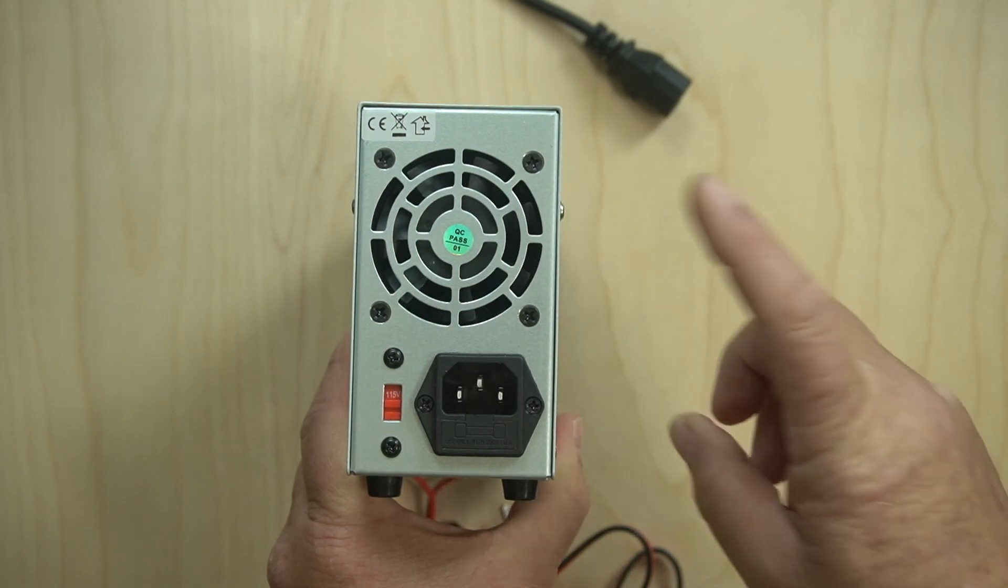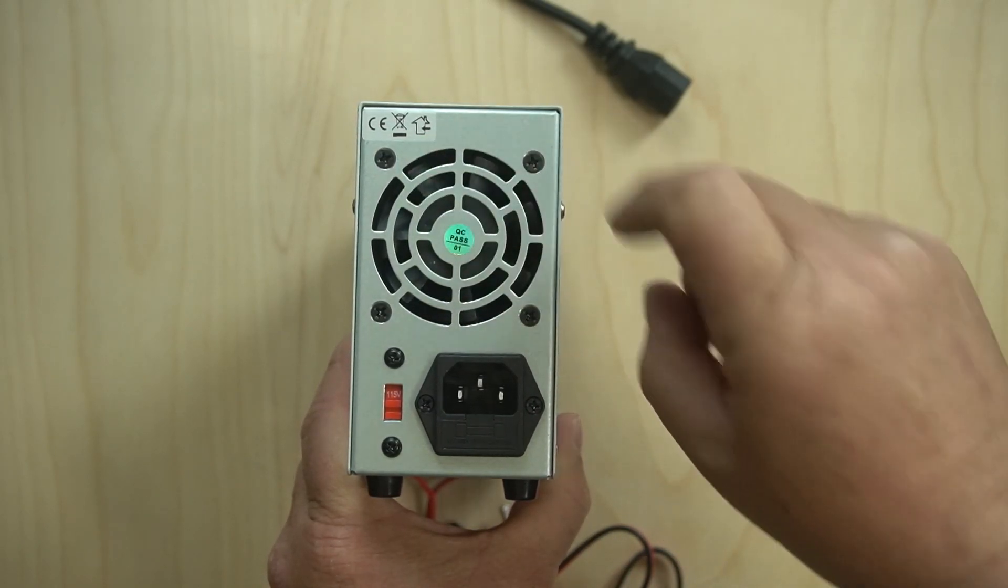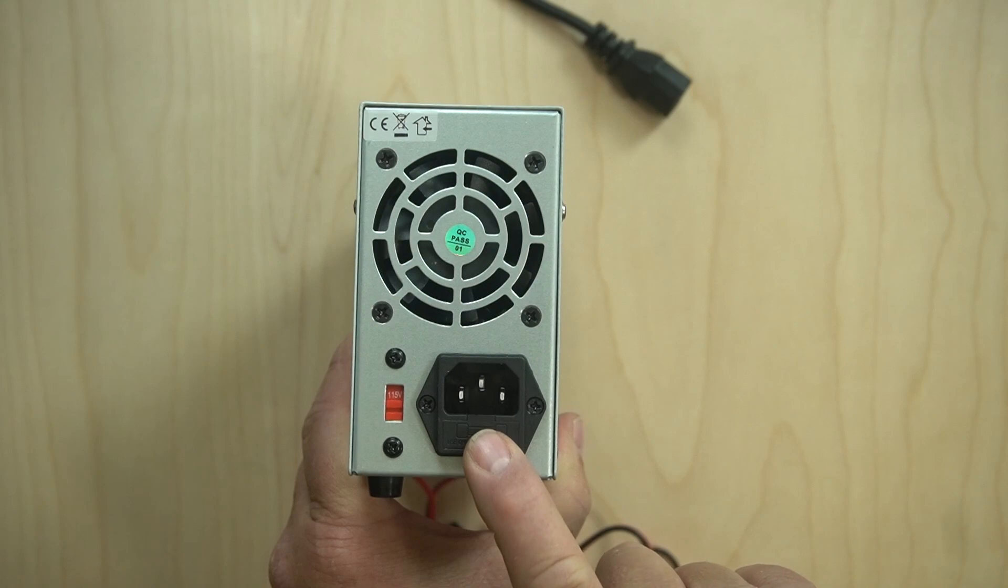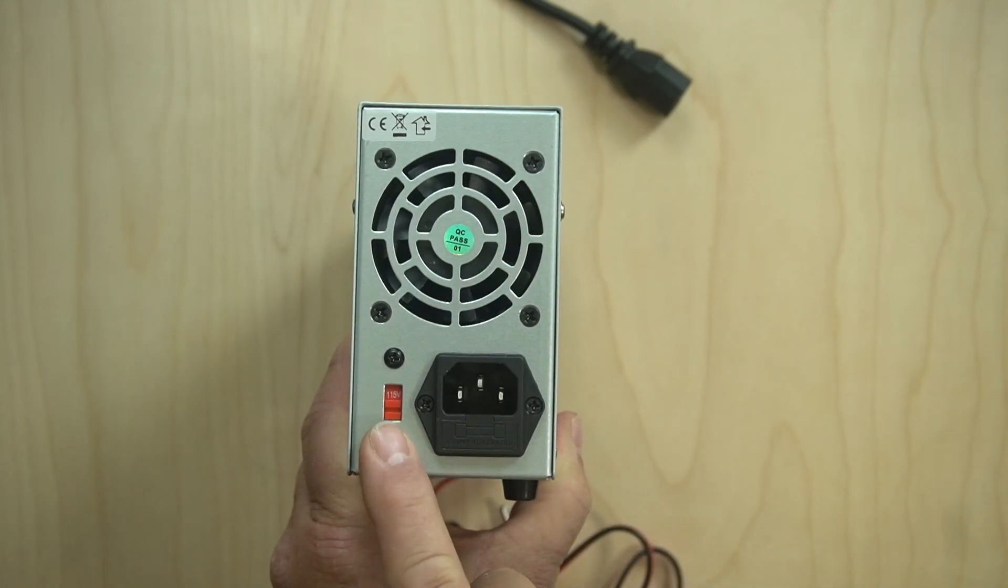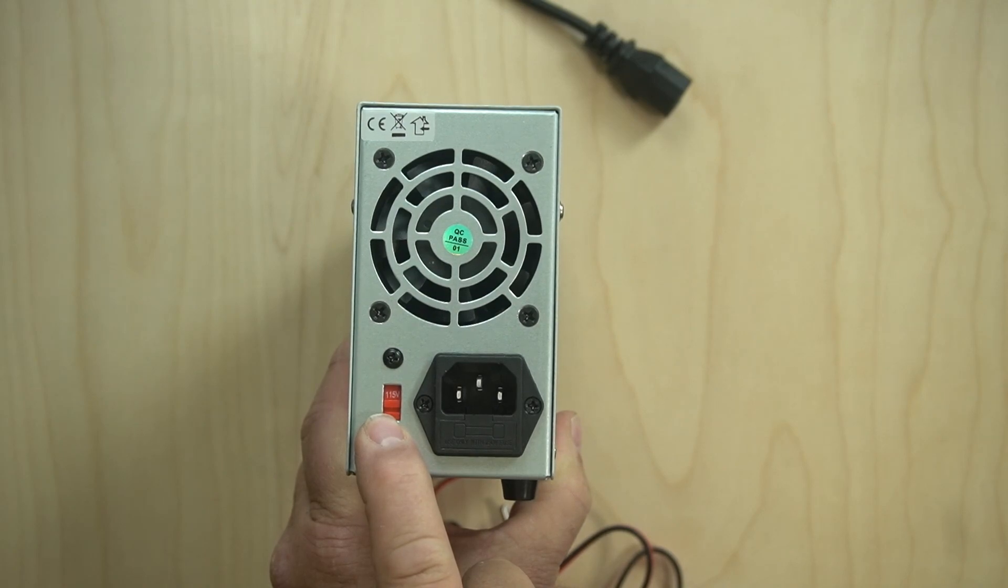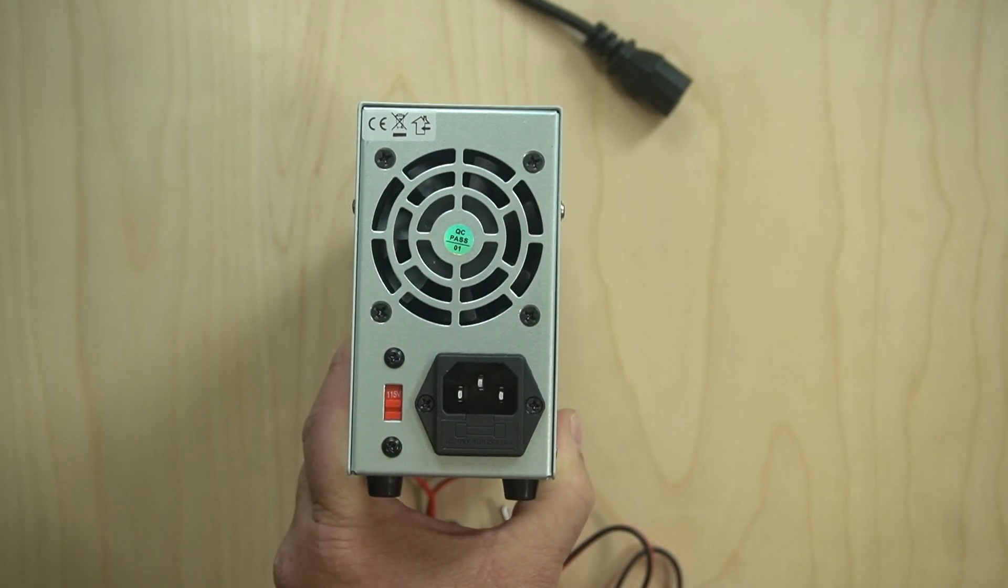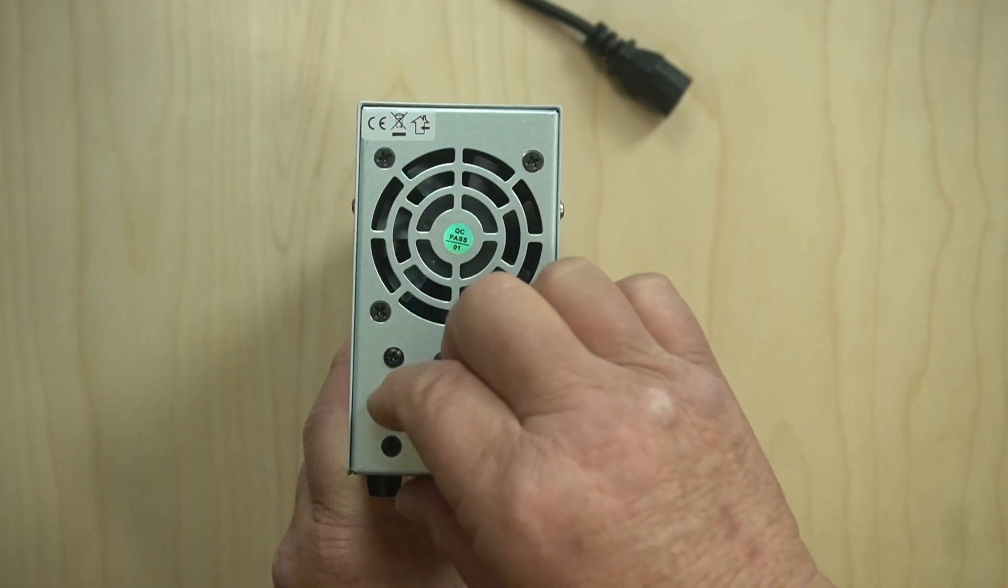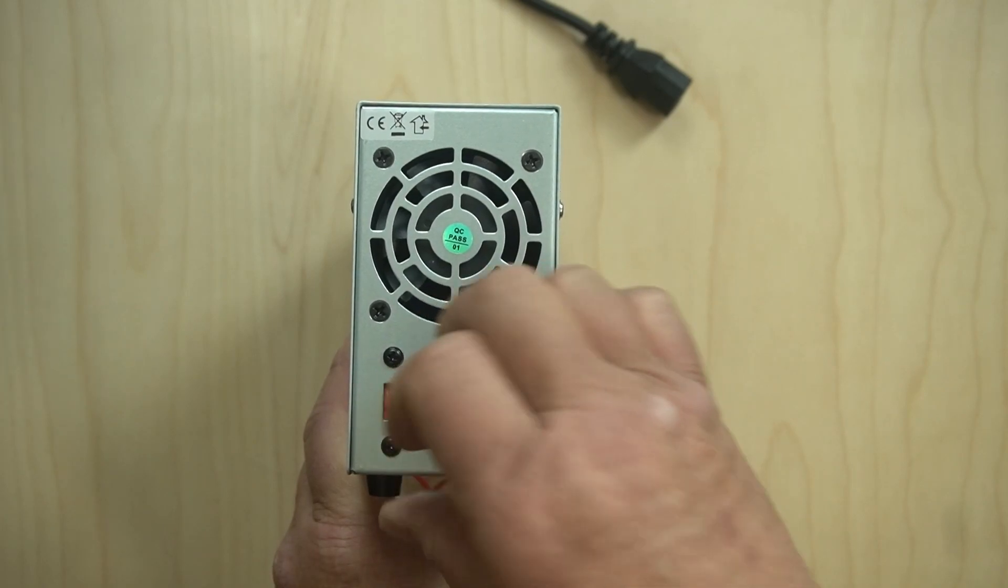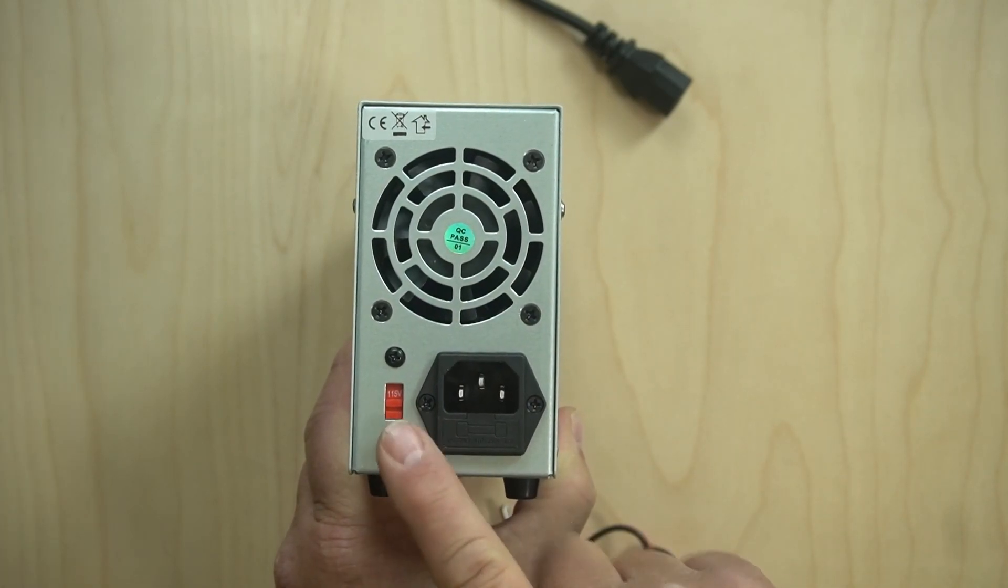On the back we have the fan up here. It's held in with four screws. You have the power plug that I showed you earlier, plugs into here. And then over here you have the switch to switch it to whatever country you live in. For here in the United States we use the 115. If you switch it the other way, it's 230 right there. So I'll put it back so it's right for me. Make sure you switch this before you start using this thing guys.